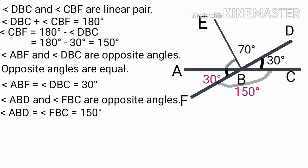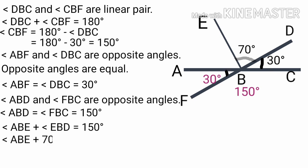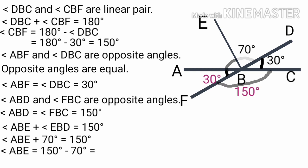Angle ABF is equal to angle ABE plus angle EBD. Therefore angle ABE plus angle EBD is equal to 150 degrees. Angle EBD is 70 degrees. Therefore angle ABE is equal to 150 minus 70 degrees, that is equal to 80 degrees.